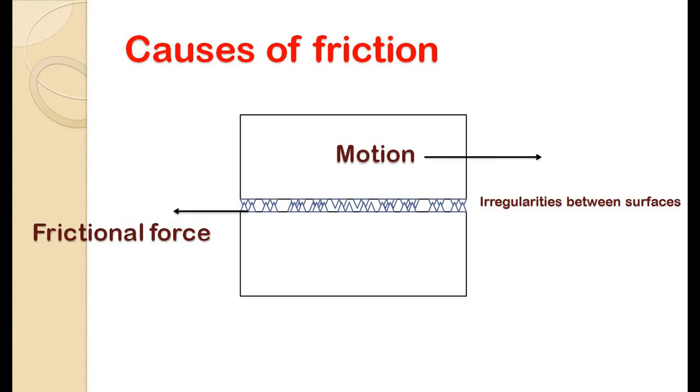We will go one by one. So the peripheral molecules of the two surfaces in contact are attracted towards each other and form adhesive bonds. These bonds need to be snapped for the two surfaces to slide over each other.